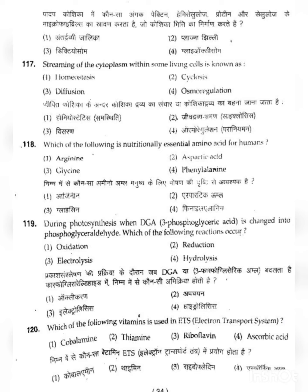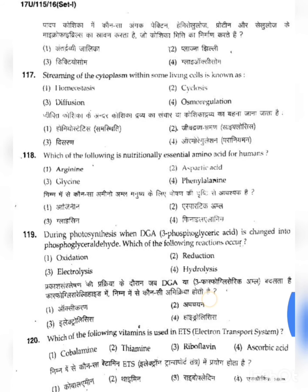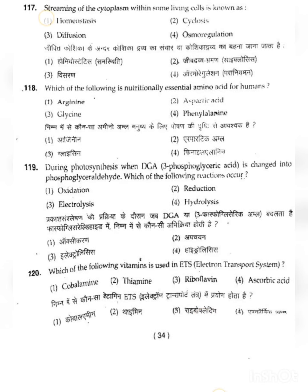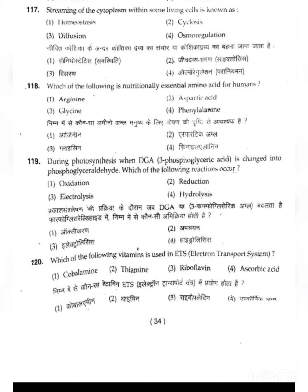Question 118: Which of the following is a nutritionally essential amino acid for humans? Amino acids are of two types: essential and non-essential. The question asks which one is essential. The first option is the correct answer for question 118 (the essential amino acid).